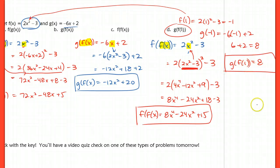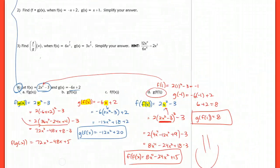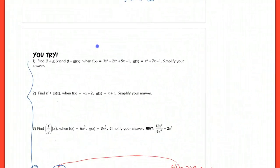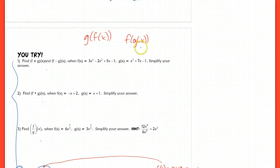That's the end of the lesson. Please try the 'you try' problems, and go back and review the composition f of g of x — how to do this when you're given two functions and not given a number to input in for x. I'll see you next time!